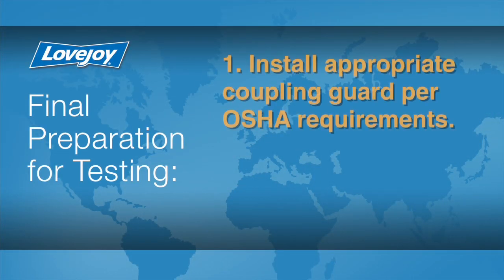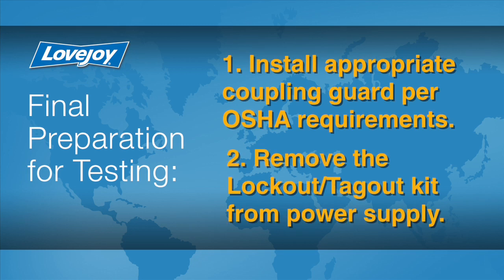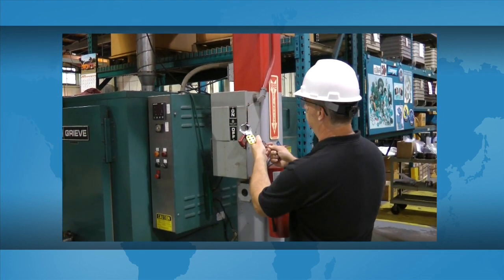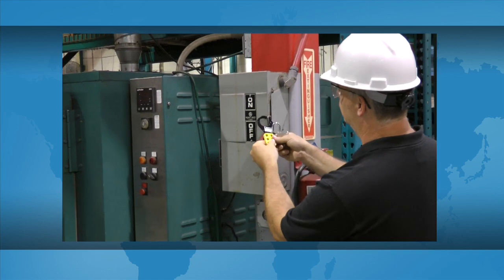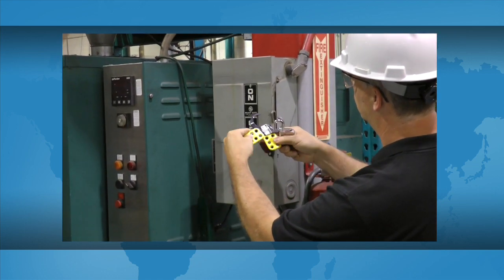Install the appropriate coupling guard per OSHA requirements and remove the lockout tagout kit from the power supply. The equipment can then be started up and tested.